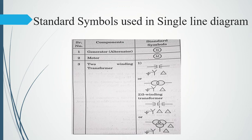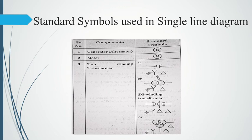Now let's see the components. The first is the generator — it is simply a circle with 'G' written inside. Then we have a motor, similar to the generator but with 'M' inside. Then there is the interesting case of a two-winding transformer. It can be shown in multiple ways: with two coils representing the primary and secondary windings.